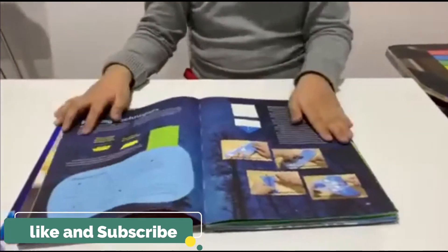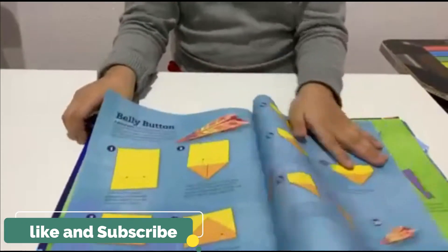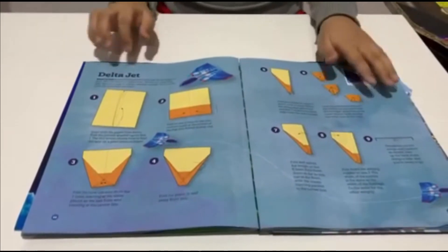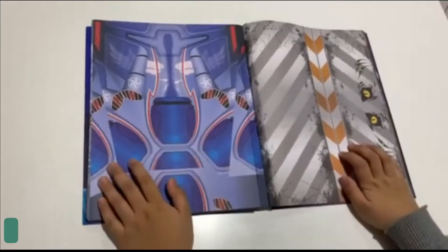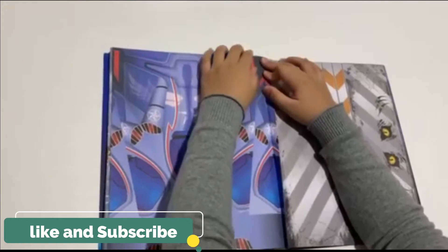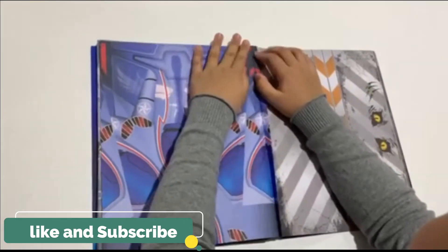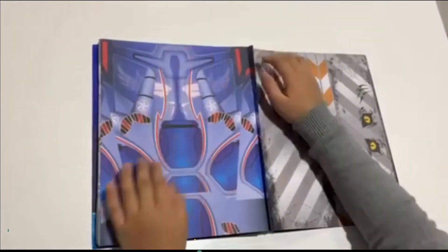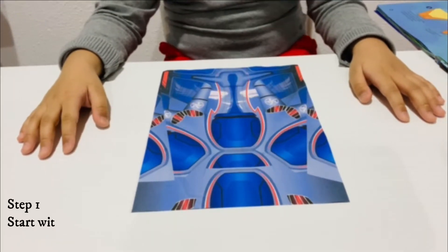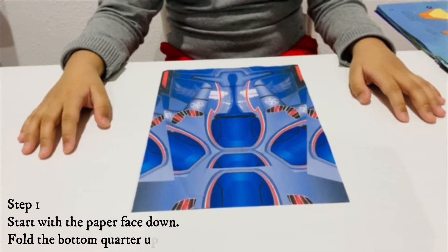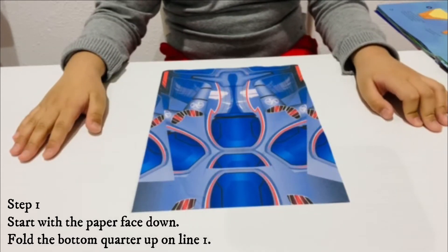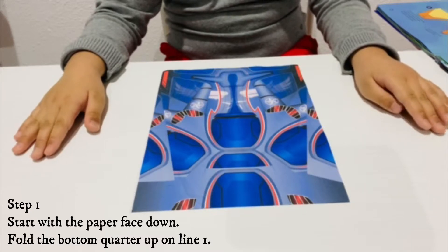Let's get started. This is how to make a Delta Jet. Step 1: Start with the paper face down, fold the bottom quarter up on line 1. The red owl shows how to find the spot on a painted piece of paper.